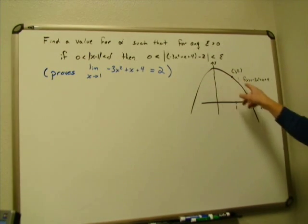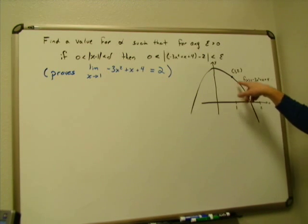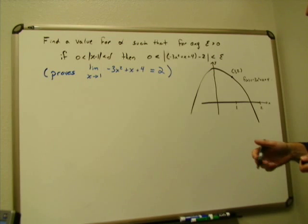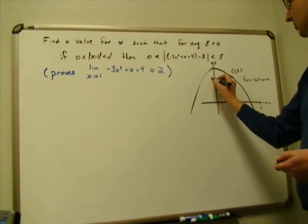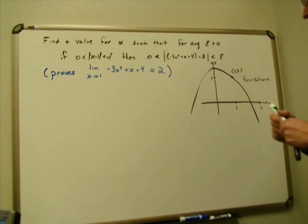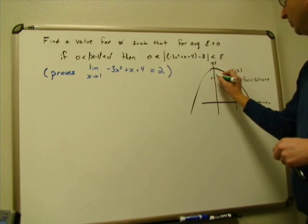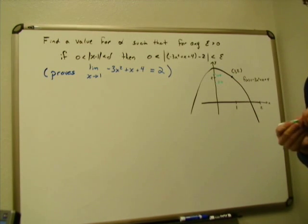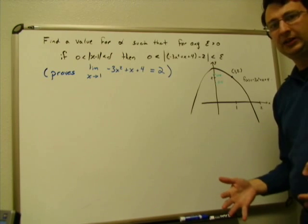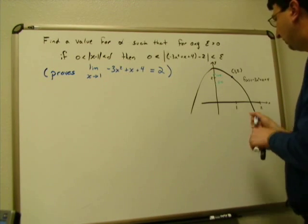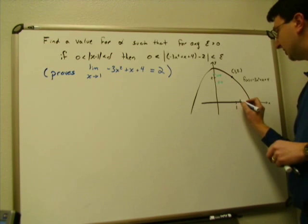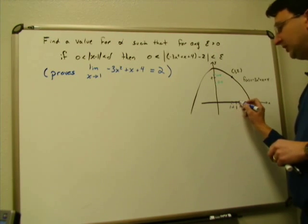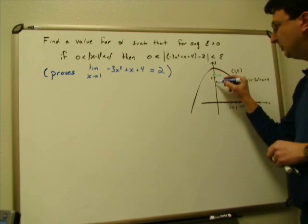Looking at that function, we know it's a polynomial opening downwards. If I put in x equals one, I get an output of two. I'm going to allow some error in my answer — that error is the epsilon value. So here's two, and here's two plus epsilon and two minus epsilon. For any epsilon I pick, I need to figure out what value of delta guarantees that when I go one plus delta and one minus delta, all those function outputs are inside that range.